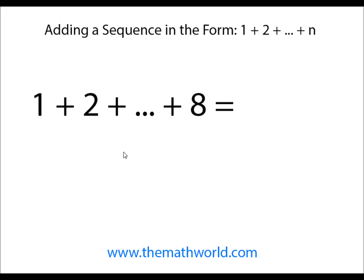A nice shortcut to do this is we'll take the last number which is 8, multiply it by the next highest number which is 9, and divide that entire thing by 2.